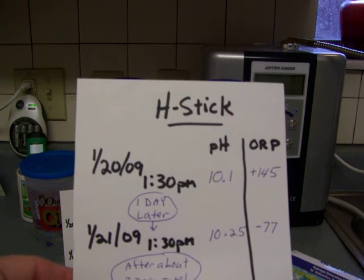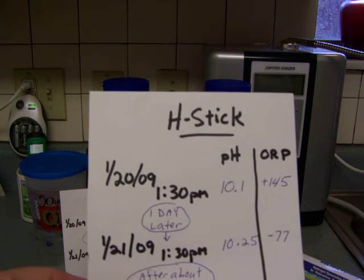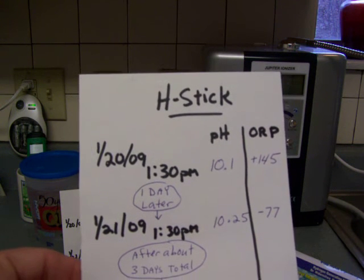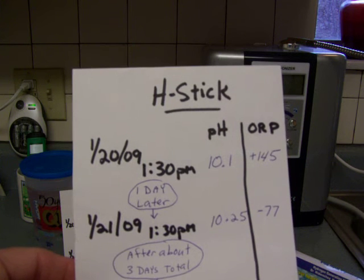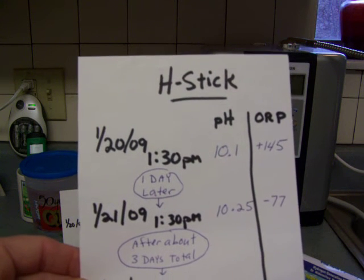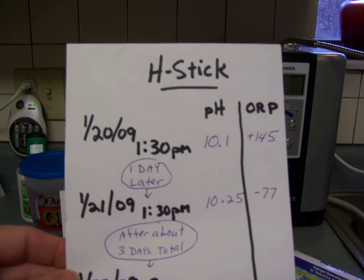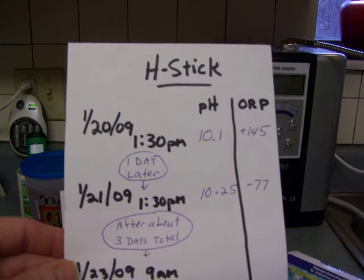Now, a positive 145 is not a good ORP. What it does to your cells is, it's kind of like cutting an apple open and leaving it on the counter to oxidize, and it will get brown and start rotting. And that is what happens to your cells when they're soaked in water that is a positive 145 ORP.